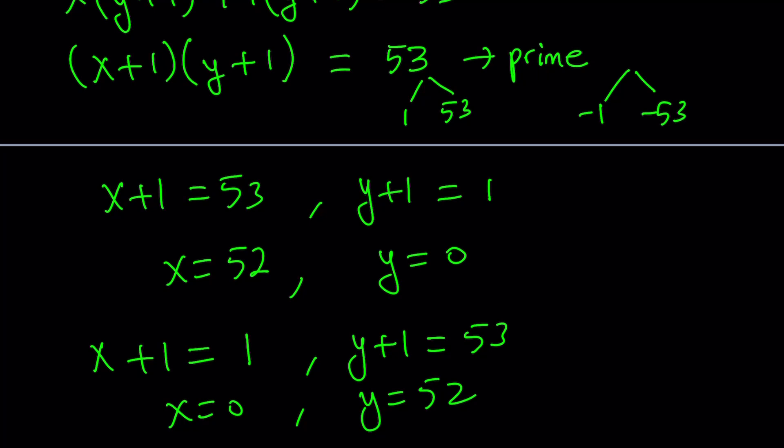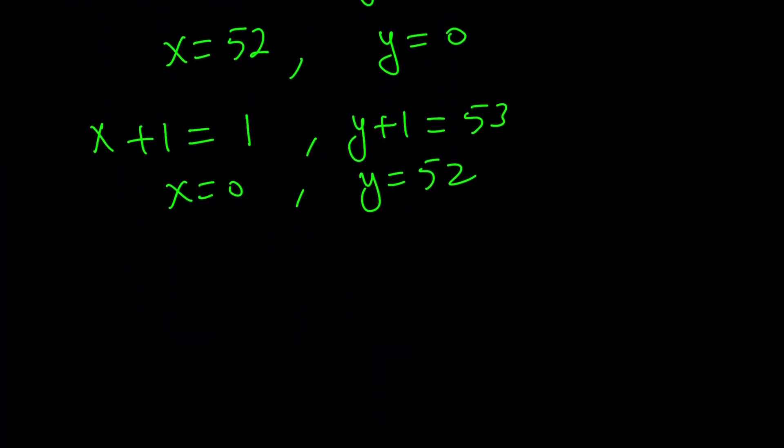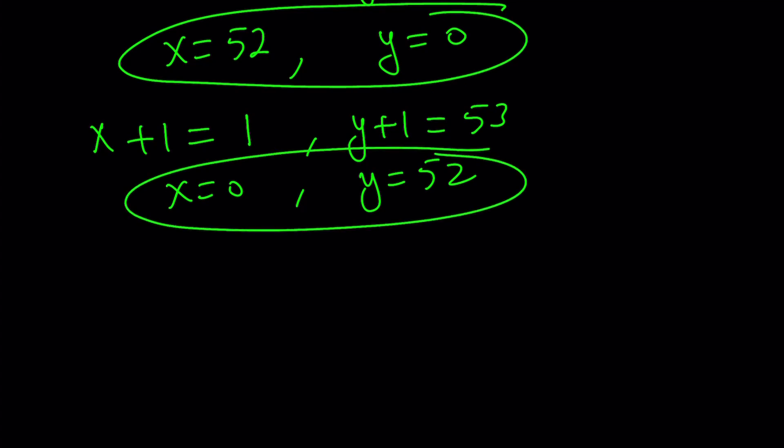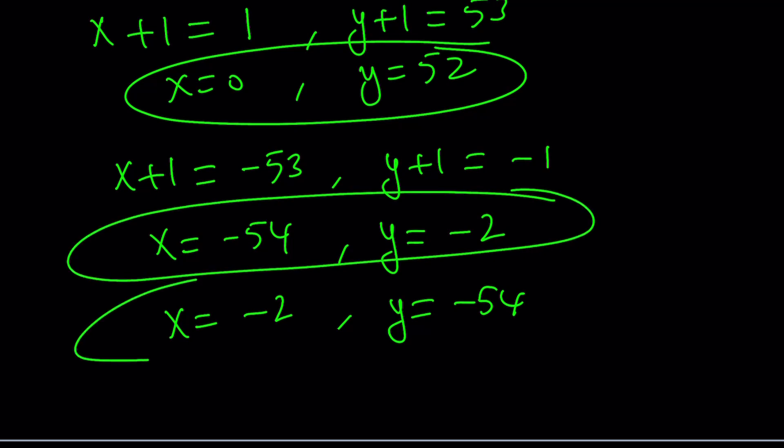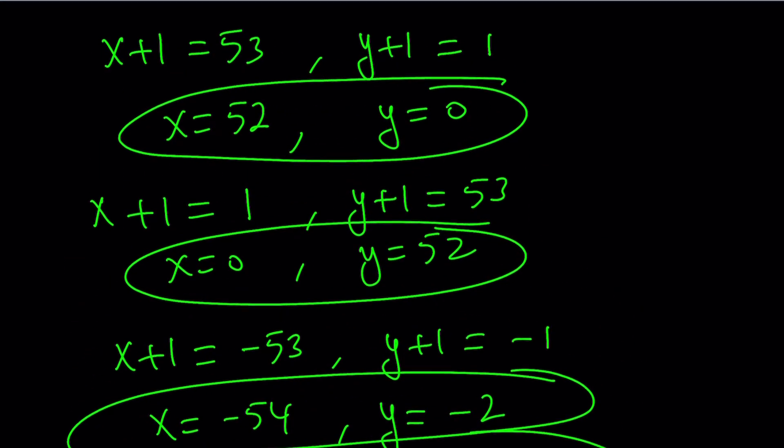You could also just switch the x and y values and that'll give you the same thing. So far, we got this and that. Let's do it for the next cases. So x plus 1 can also be negative 53 and y plus 1 can be negative 1. So that negative 53 times negative 1 is positive 53. From here, we get x equals negative 54 and y equals negative 2. But switching the x and y around gives us x equals negative 2 and y equals negative 54. So that gives us another two cases. And in total, we're going to have four cases.